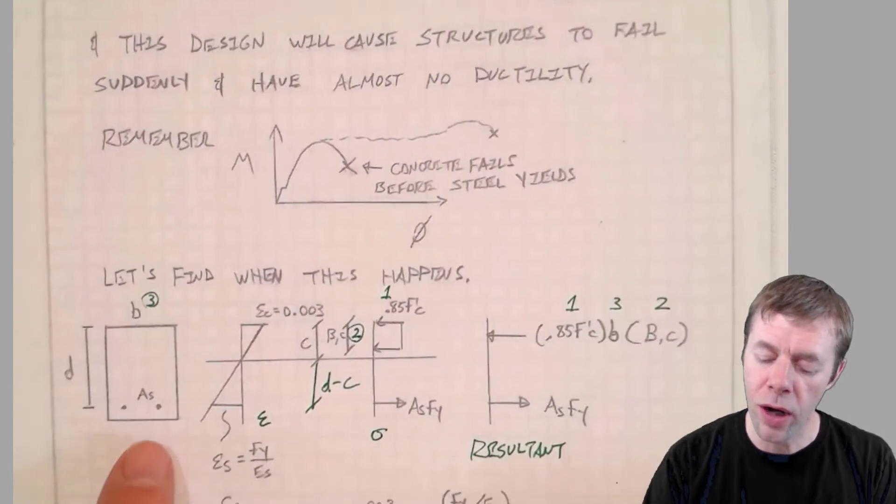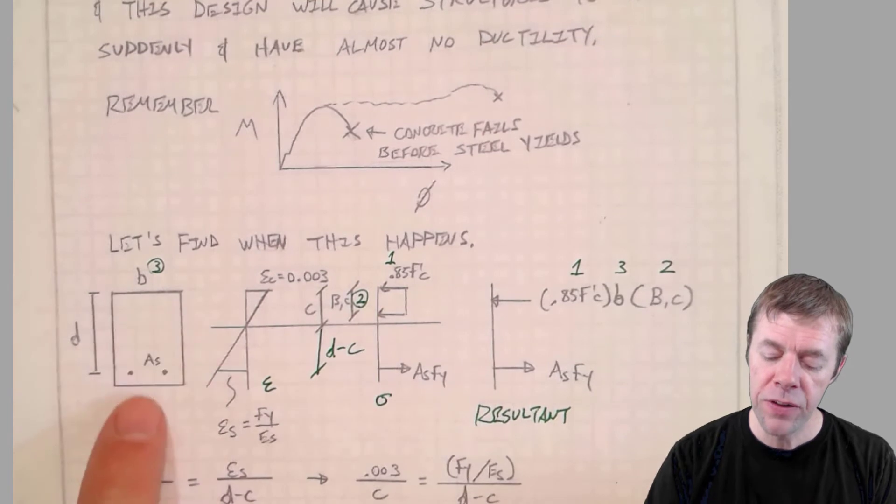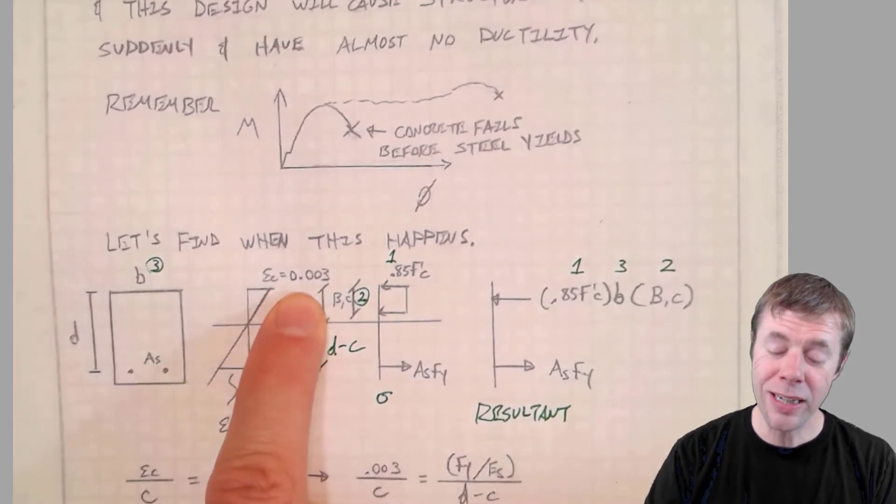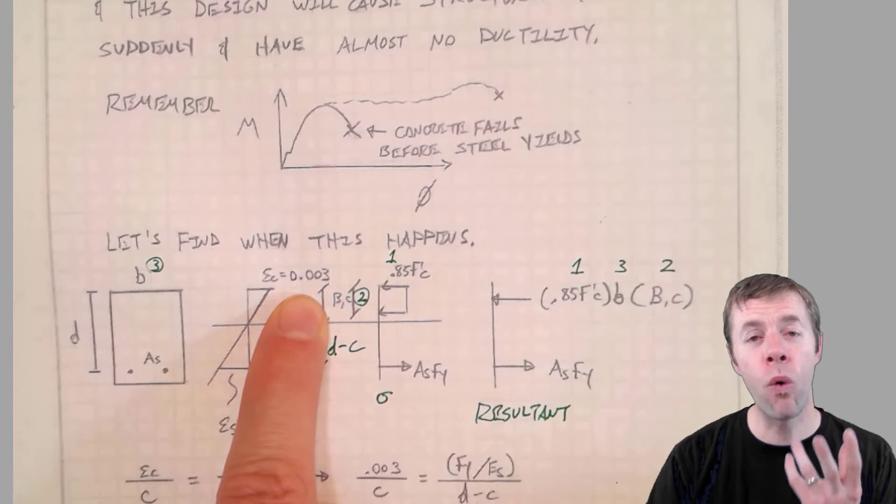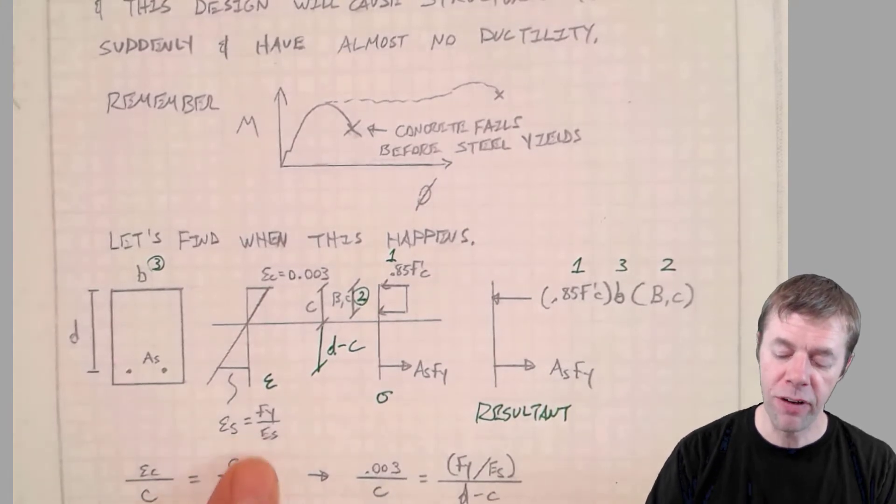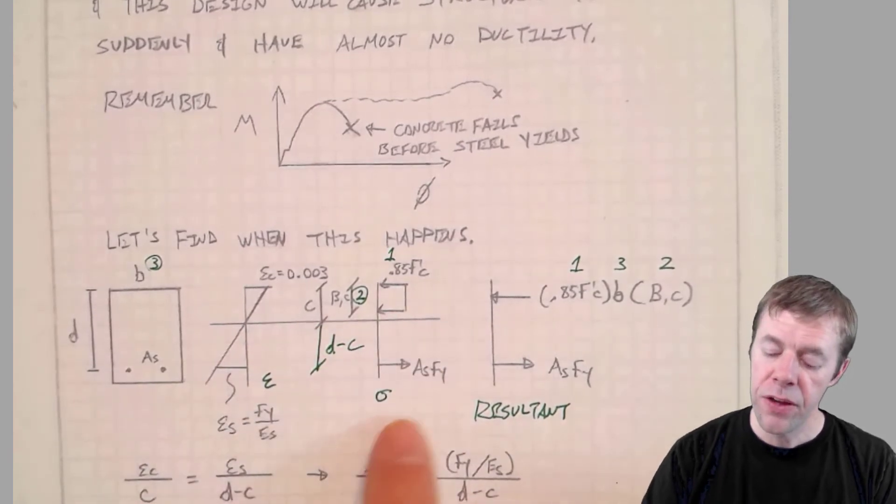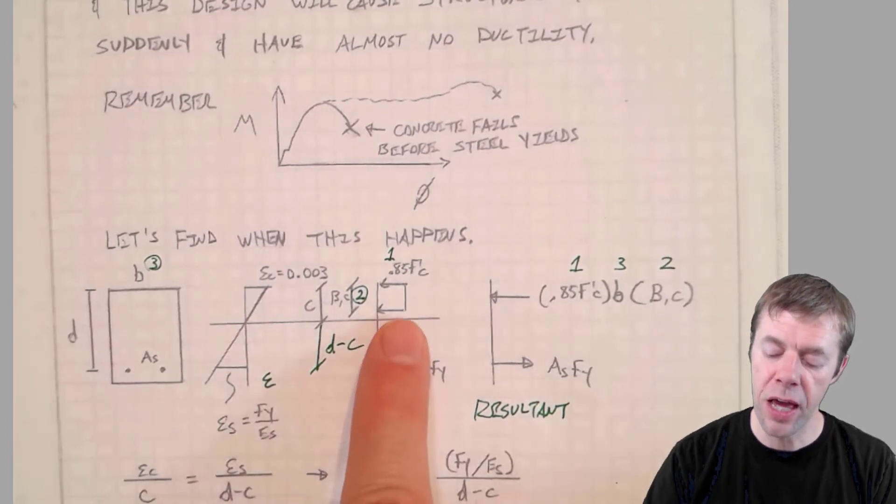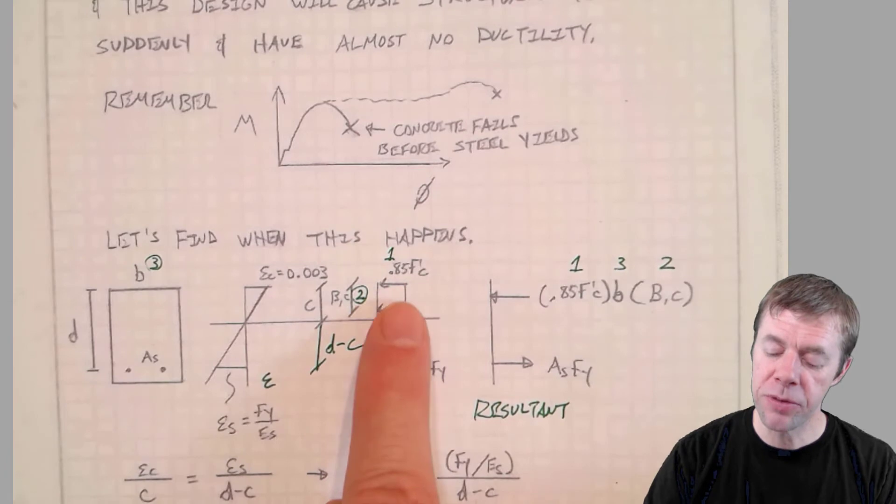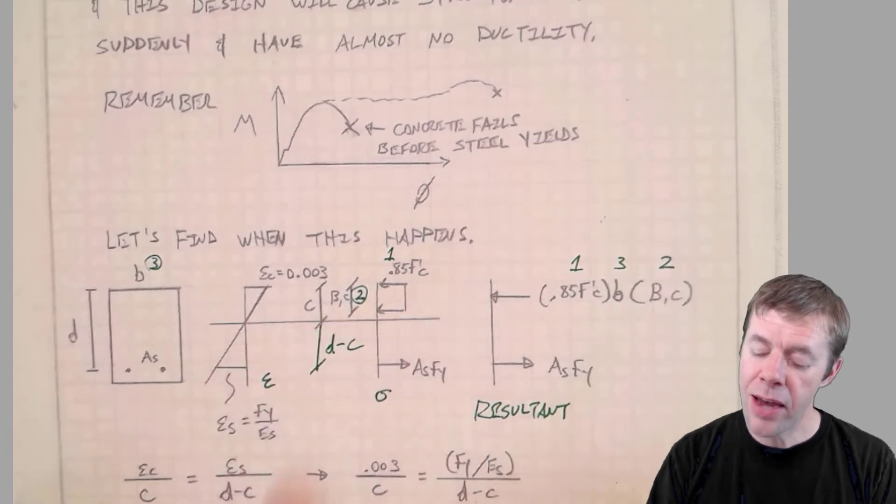So what we're going to do is we're going to draw a cross-section. We're going to derive this balance reinforcement. This is a beam. This is the area of steel. This is B. This is D. This is the strain. This is the strain in the steel and compression or what we assume for a Whitney stress block 0.003. And this is the strain in the steel at yield. Fy divided by the modulus of steel. This dimension is C. And now we're going to derive the stress block.